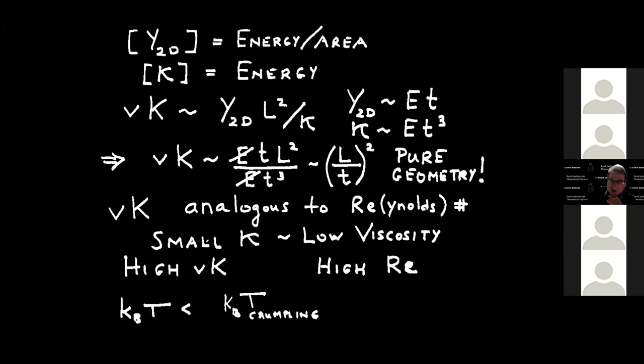Very low bending rigidity corresponds to high temperature — we expect the system to crumple in some way. But first we're going to explore the regime below the crumpling transition temperature, and then think about crumpling. Now let's look at thermal fluctuations in the system.